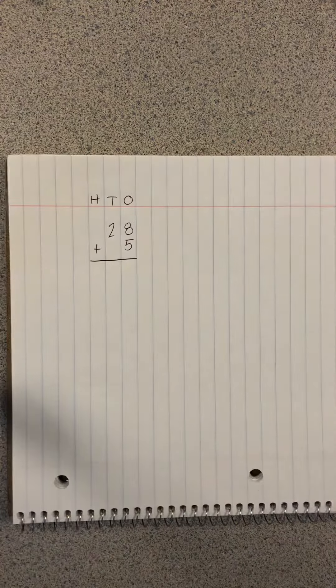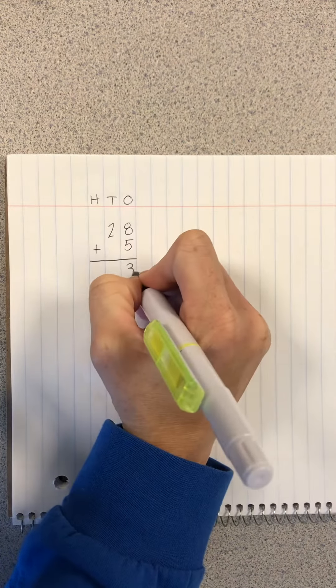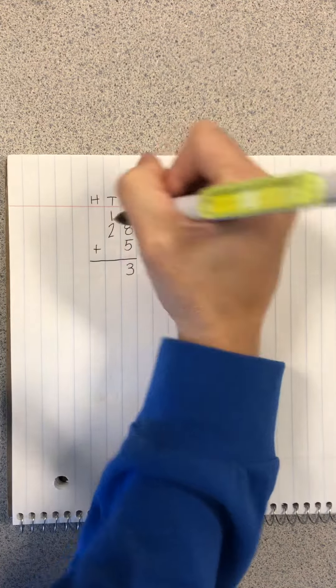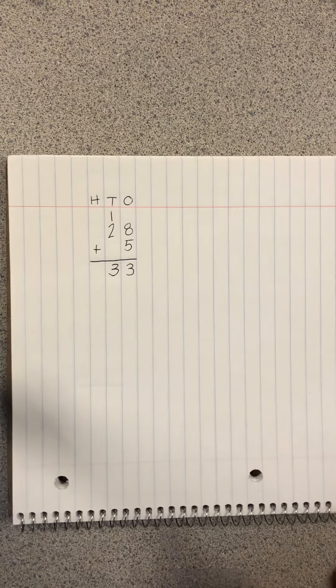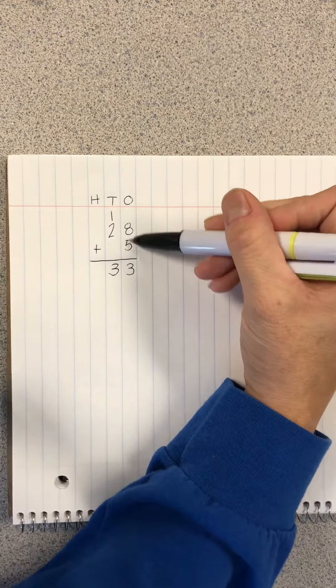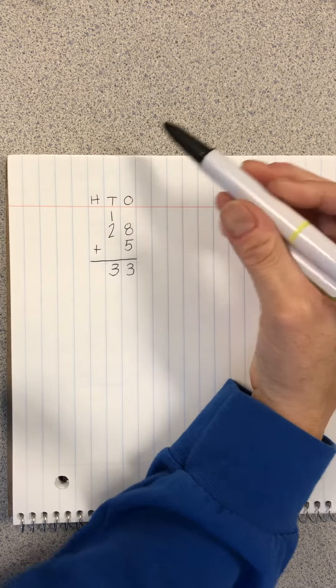I know that 8 and 5 is 13, so I'm going to write my 3 here, carry my 1, and now I have 3. The reason this is neat is because it makes you keep your ones lined up, your tens lined up, and so on.